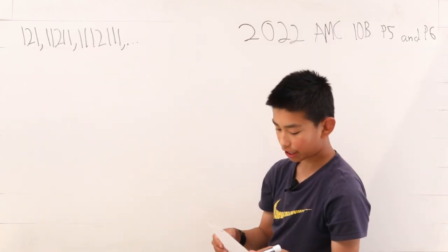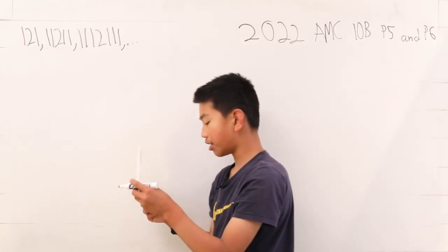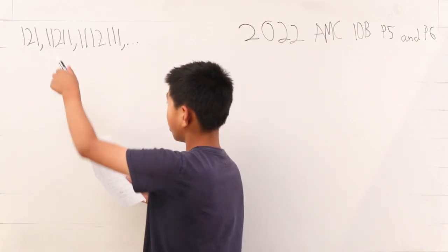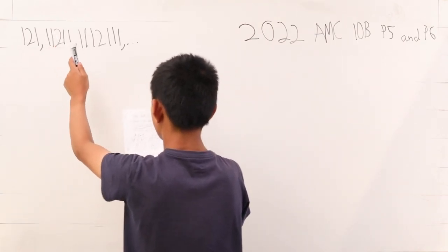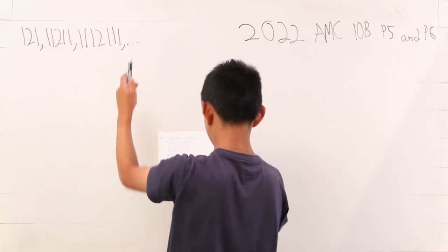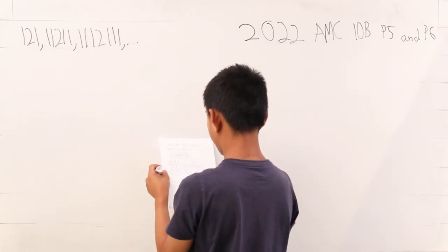Now we're solving problem 6. How many of the first 10 numbers of the sequence 121, 1121, 111211, dot dot dot, are prime numbers? So we want the first 10 numbers.